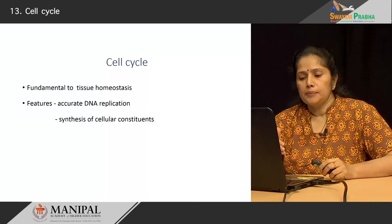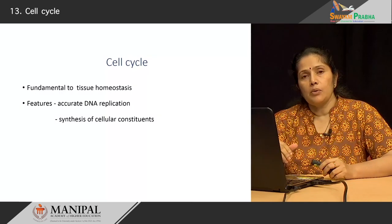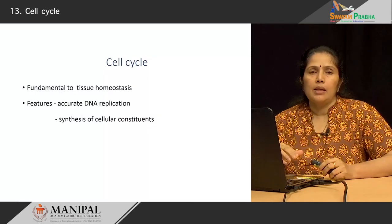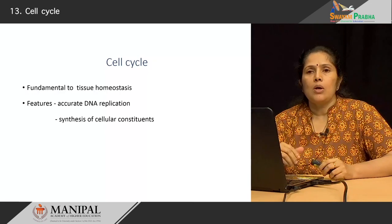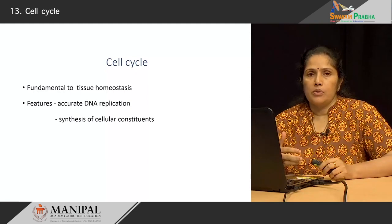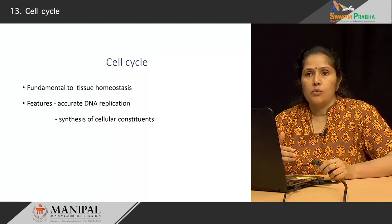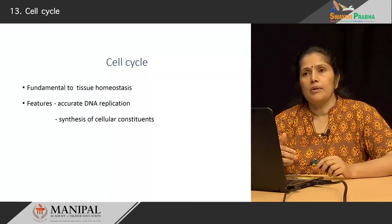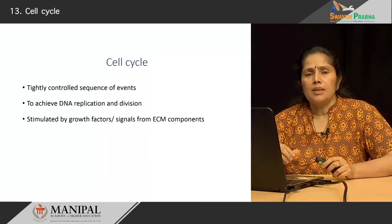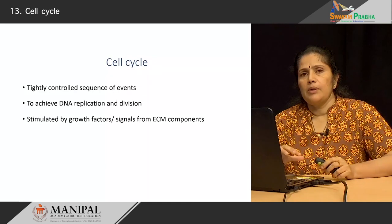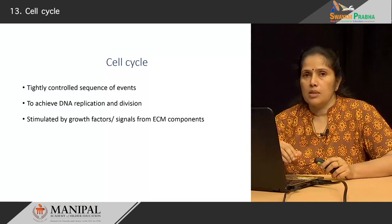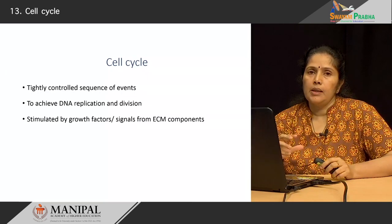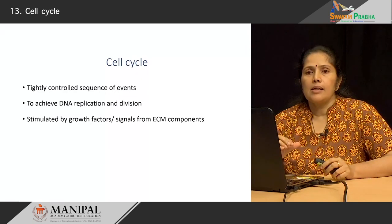The cell cycle requires that there is accurate DNA replication, and along with the DNA replication, the cellular components also have to be reconstituted appropriately. So it has two very important key requirements. This entire process is a very tightly controlled sequence of events which will achieve DNA replication as well as cell division.